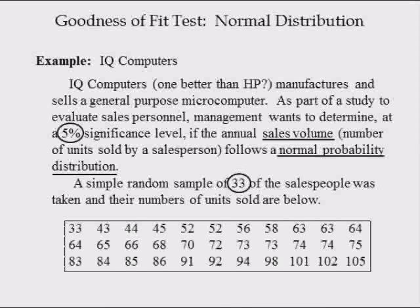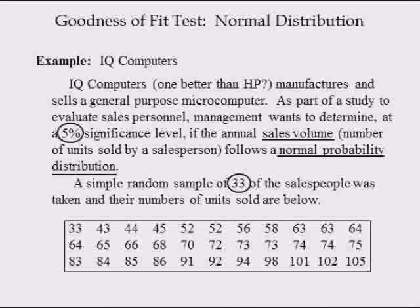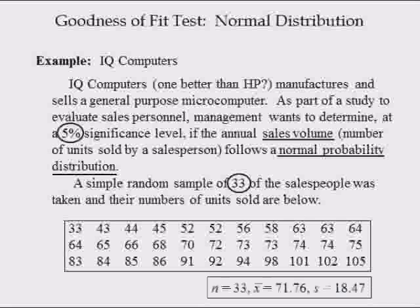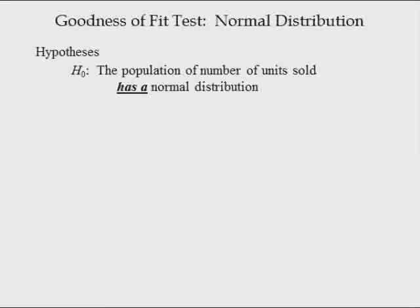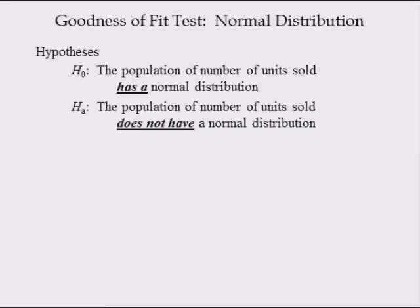The first salesperson sold 33 computers, the second sold 43, the third sold 44, and so on. The sample size is 33. The sample mean is equal to 71.67 computers sold, and the sample standard deviation is equal to 18.47 computers sold. The null hypothesis is that the population of number of units sold has a normal distribution. The alternative hypothesis is that the population does not have a normal distribution.